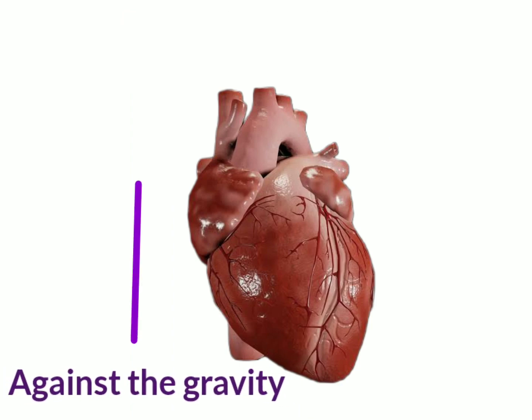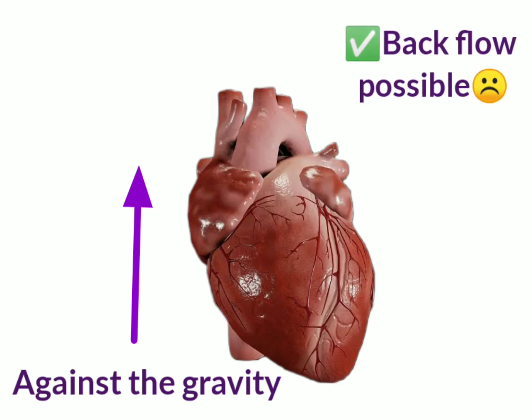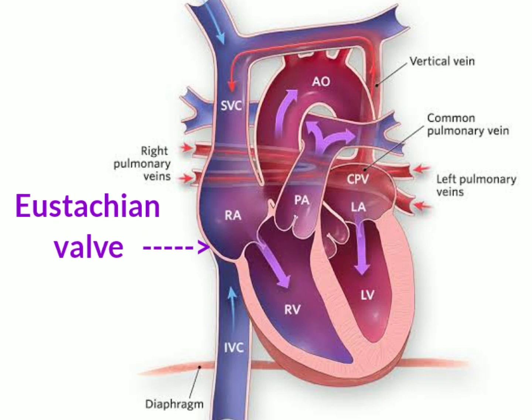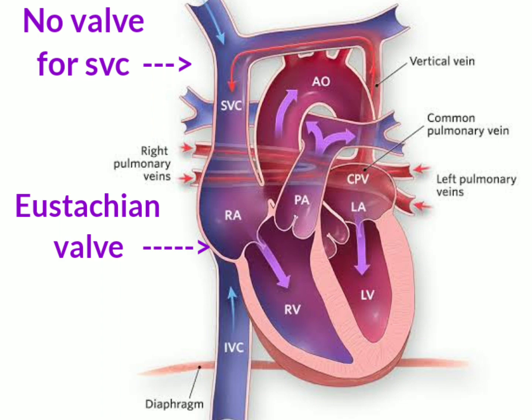The deoxygenated blood from the lower parts of the body is received by the inferior vena cava. Since the inferior vena cava pumps blood against gravity, there is a chance of backflow. To prevent this, there is a valve present in the inferior vena cava called the Eustachian valve. Note that there is no valve present in the superior vena cava.